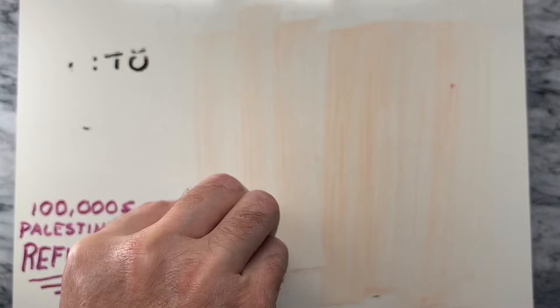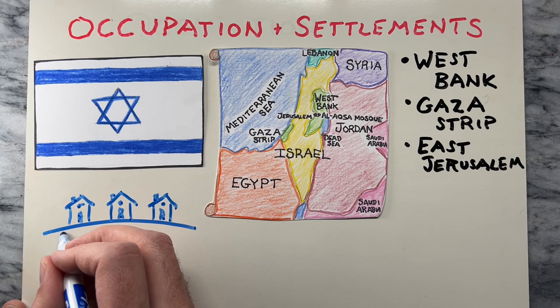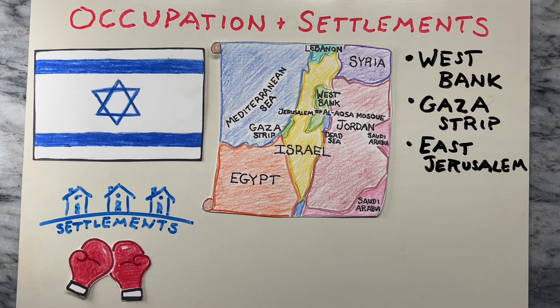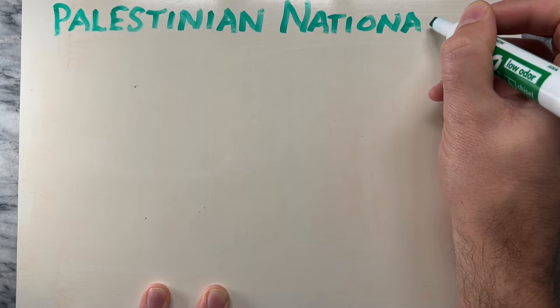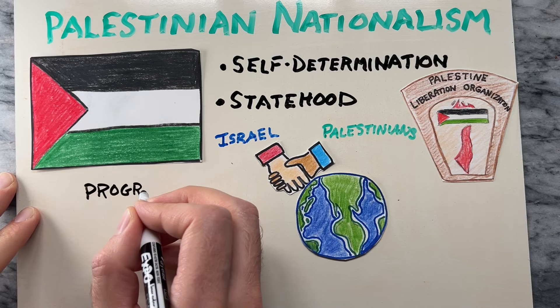Israel has since occupied various territories, including the West Bank, Gaza Strip, and East Jerusalem, as a result of subsequent conflicts. Israel's establishment of settlements in these occupied territories has been a major point of contention, as it's seen as a violation of international law and a hindrance to peace. Palestinians have sought self-determination and statehood, with the Palestinian Liberation Organization representing their interests. Negotiations between Israel and the Palestinians, often mediated by the international community, have been ongoing for decades but have made limited progress.